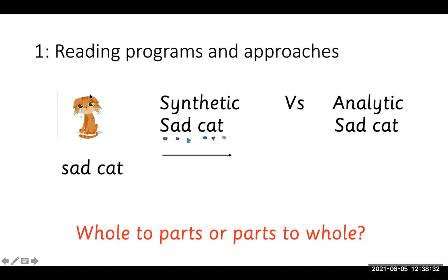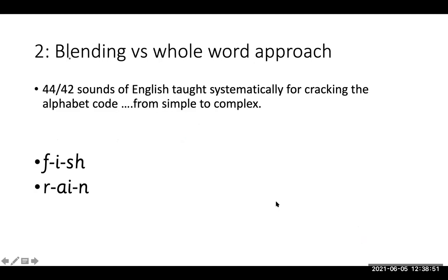Most of the time in analytic phonics it's taught with a picture, so the picture and the whole word are given for a whole word reading program. We need to understand what is whole-to-parts versus parts-to-whole. In the whole word approach the word is given for reading with no blending, but in blending the sounds are blended together to make a complete word. In the beginning, simple words and simple sounds are given — for example, f-i-sh (fish), r-ai-n (rain).